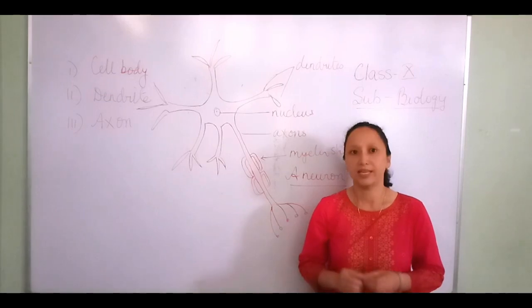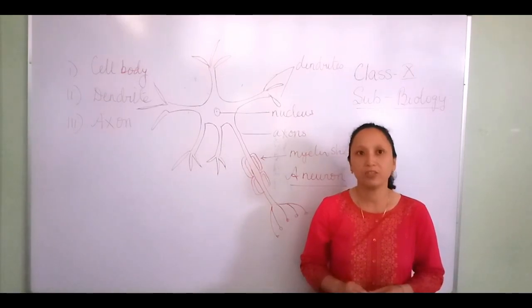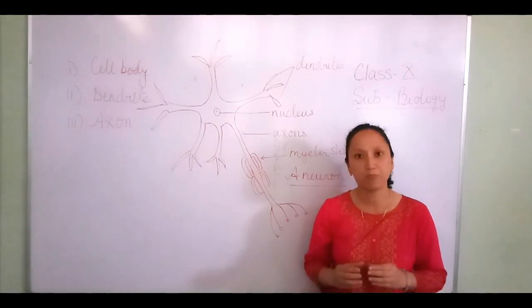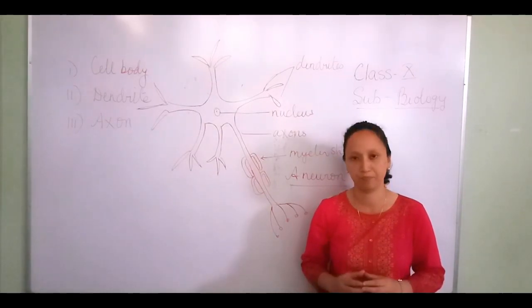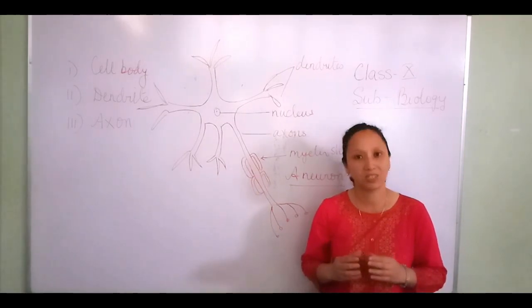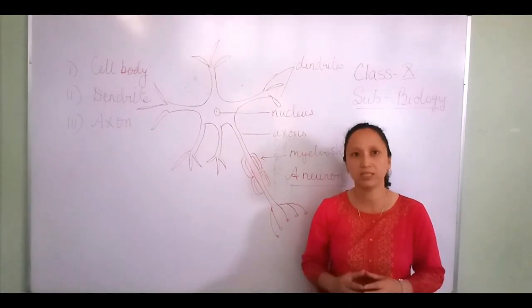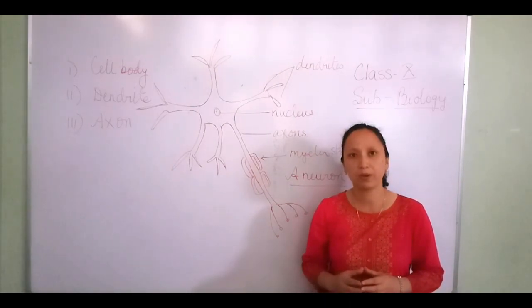In simple words, coordination in the living body is a process by which various organs interact and work together to adjust vital activities in the body. Control is the capacity to restrain and regulate various vital activities through a proper regulating system.